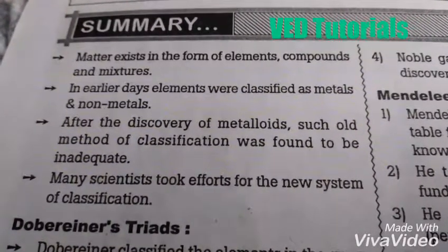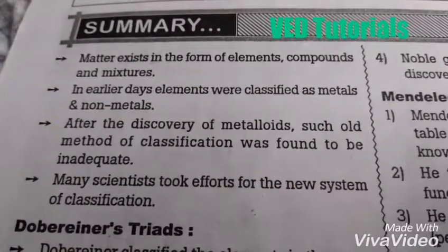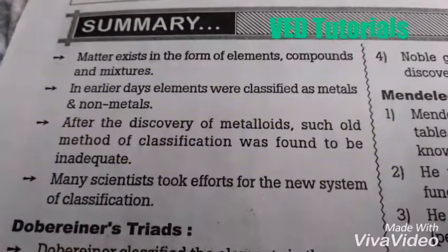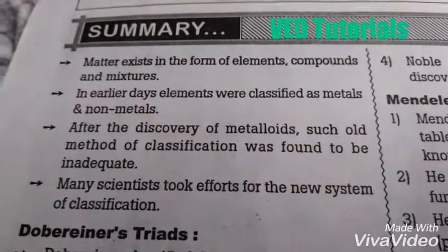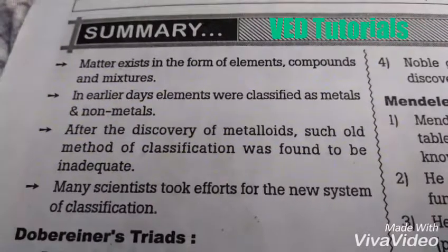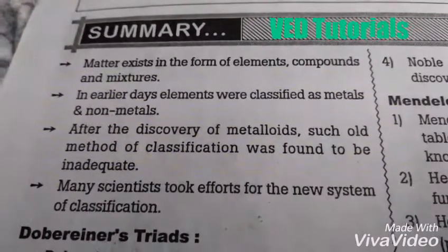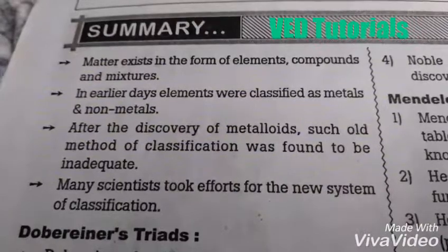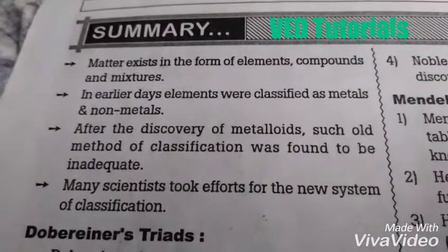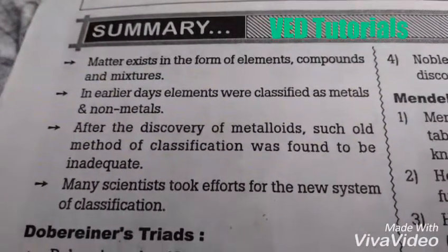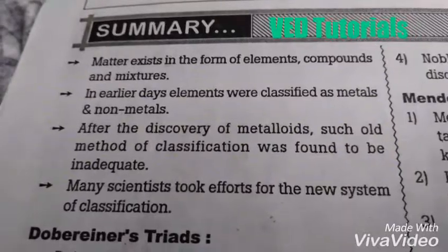So many scientists took efforts for a new system of classification. These scientists like Dobereiner, Mendeleev, Newlands, and Henry Moseley. So students, first we start from Dobereiner's triads.